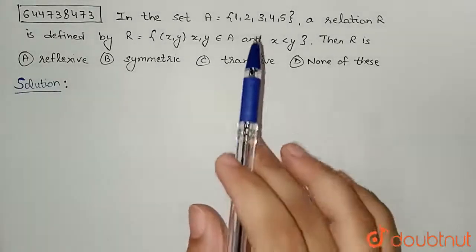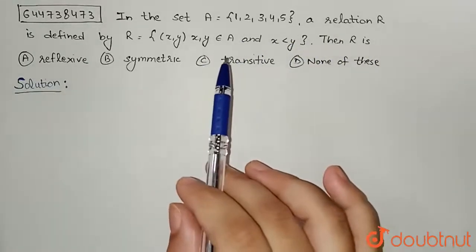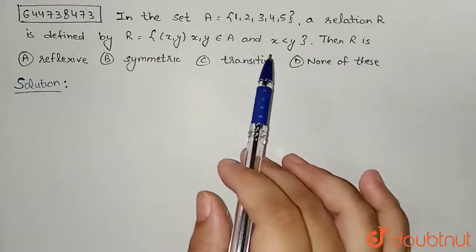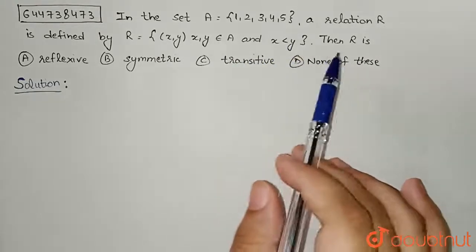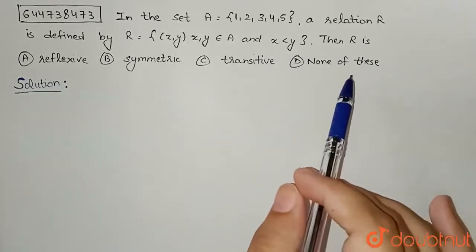In the set A = {1, 2, 3, 4, 5}, a relation R is defined by R: x,y belongs to A and x is less than y. Then R is reflexive, symmetric, transitive, or none of these.